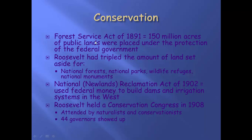The first is the Forest Service Act of 1891 — Teddy doesn't do this, but it's put in place before him. 150 million acres of public lands are placed under federal protection, telling private companies they can't touch them. What Roosevelt does is say that was a good idea — he tripled the amount of land set aside for national forests, national parks, wildlife preserves, and other national monuments.